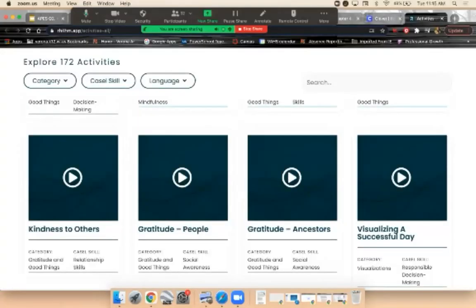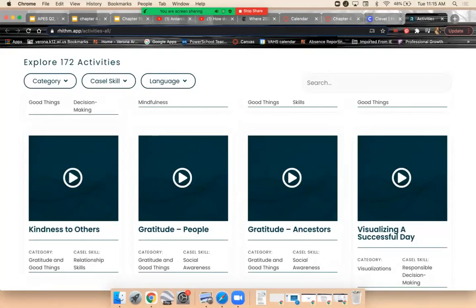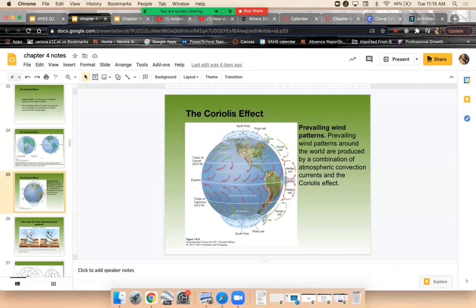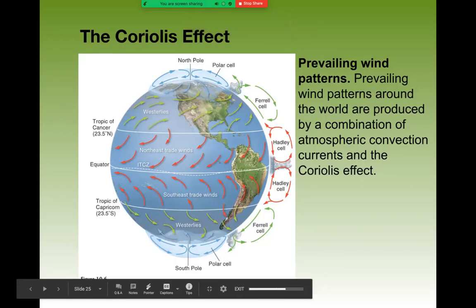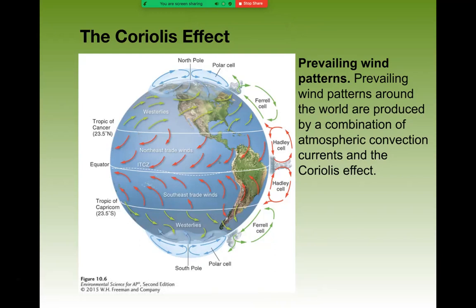Before we talk about today's topic in chapter 19, I want to go back to chapter four quickly and point one thing out about the biomes you'll see at the end of the chapter. Chapter four ends with a description of the major biomes found on planet Earth, and you will be required for the AP test to know those biomes and also know something about climographs. I want to describe a climograph and show you how it can be used to identify biomes.